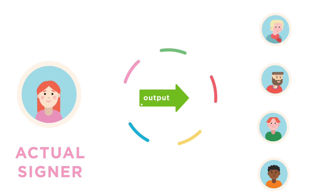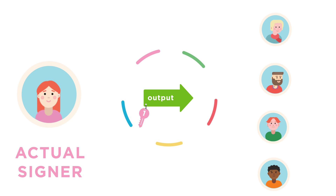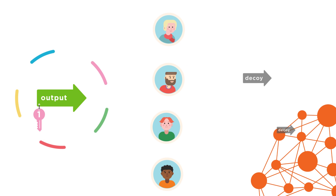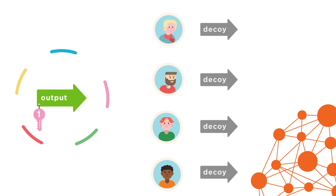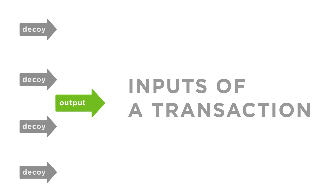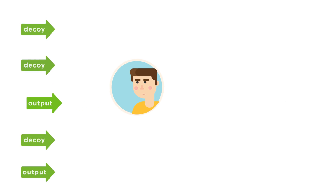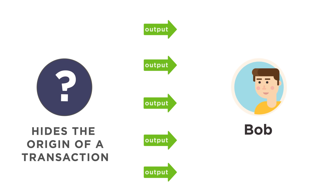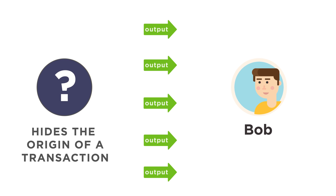The digital signature is made up of the actual signer combined with non-signers to form a ring, where all members are equal and valid. The actual signer is a one-time spend key that corresponds with an output being sent from the sender's wallet. The non-signers are past transaction outputs pulled from the blockchain, which act as decoys. These outputs together make up the inputs of a transaction. To a third party, all of the inputs appear equally likely to be the output being spent in the transaction. This feature helps the sender hide the origin of the transaction by making all inputs indistinguishable from each other.